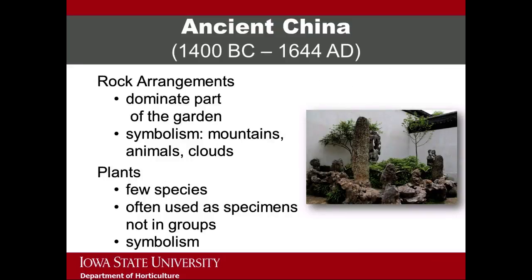Large and complex rock arrangements are always found in Chinese gardens. They are often a dominant part of the garden, more so than plants. Rocks from Lake Tai are considered to be the most authentic. The rocks can be used in groups or mass, and they can also be included to symbolize mountains, animals, or clouds. Chinese gardens include a limited number of plant species, and these plants are often used as specimen plants, not planted in large groups. Just as with the rocks, plants are often included because of symbolism. For example, lotus plants are often found within water features because the lotus flower represents purity and nobility.